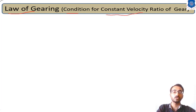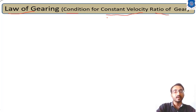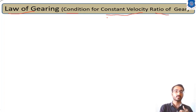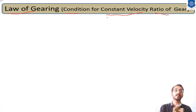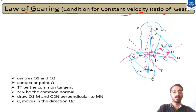The law of gearing defines the condition for constant velocity ratio of a gear. As we are aware, to transmit power from one shaft to another shaft we use gears. The gear mechanism is very essential and useful nowadays. The main advantage of the gear system is that it transmits an exact velocity ratio from the input to the output shaft. There is a certain condition that must be satisfied while designing that gear, and that condition is derived in the formula known as the law of gearing.